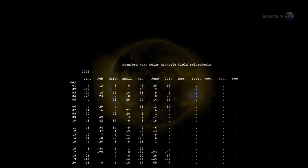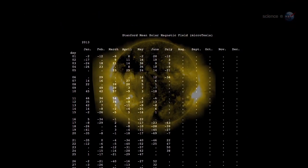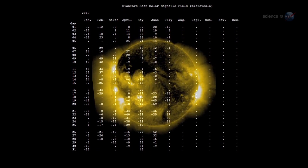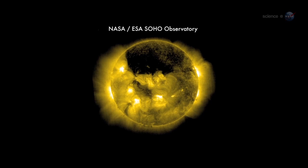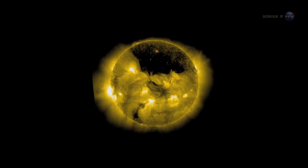As the field reversal approaches, data from Wilcox show that the Sun's two hemispheres are oddly out of sync. The Sun's North Pole has already changed sign, while the South Pole is racing to catch up, says Shearer.